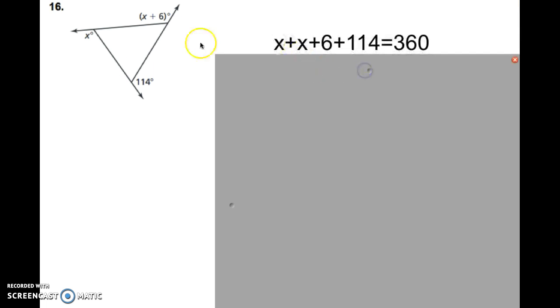Because we can take that x, right there, the x plus 6, and the 114 degrees, and we can set that equal to 360. Because I just told you that the exterior angles all add to 360.